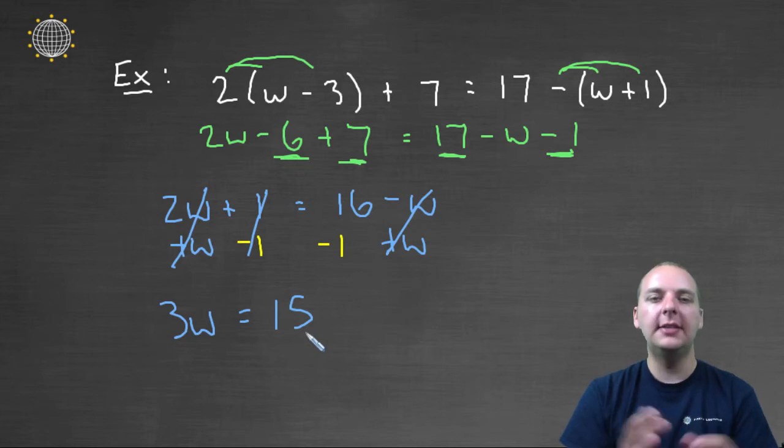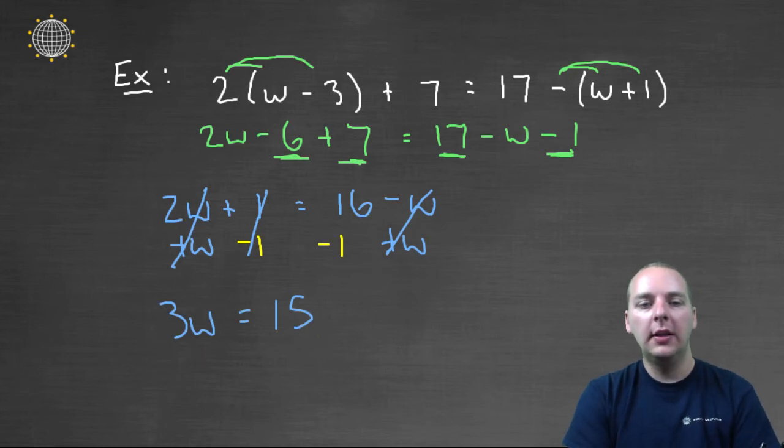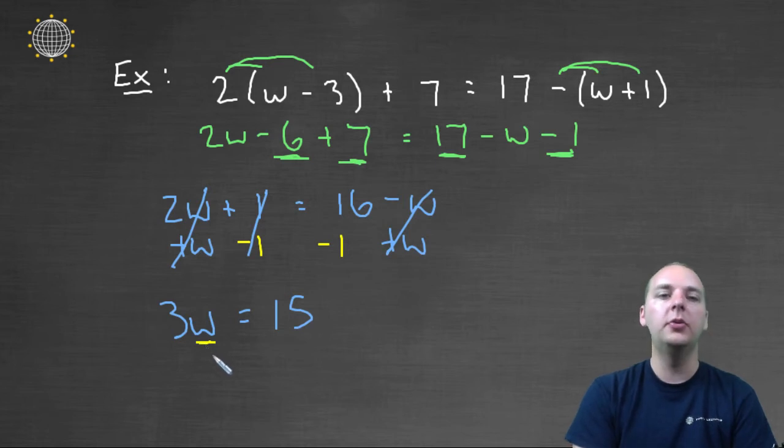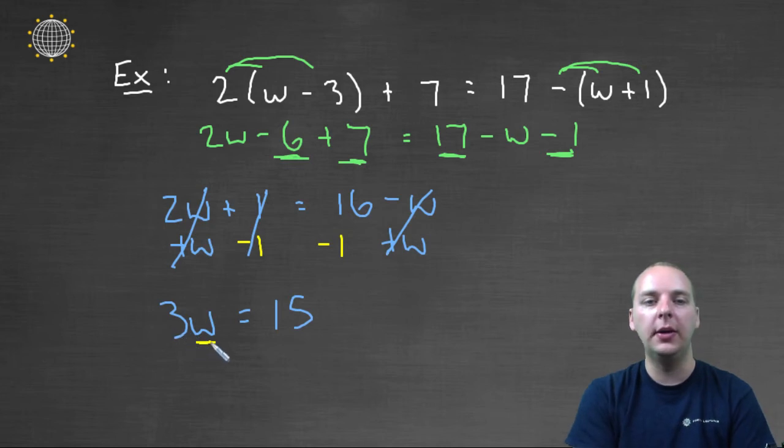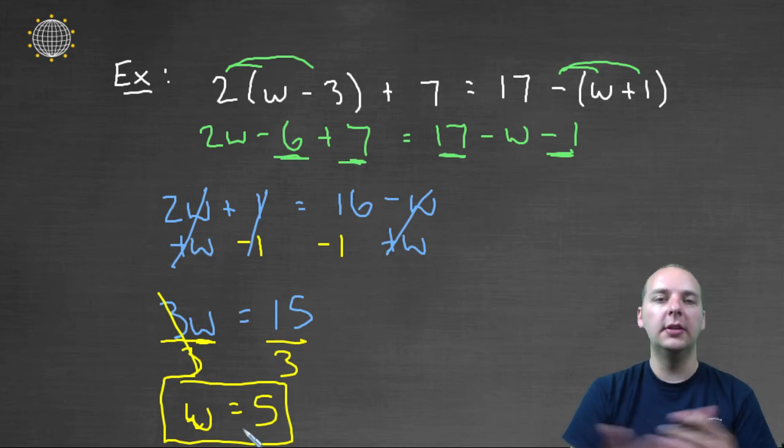If that was a little too much, if that seemed confusing, do what I just did there in two steps. Move the w's and then move the constants. The last step is to solve for w by dividing by the variable's coefficient. The coefficient's the number in front of the variable, in this case the 3. So we'll divide by 3 on the left. We'll divide by 3 on the right. And once these cancel, we'll get w = 15 divided by 3, which is 5.